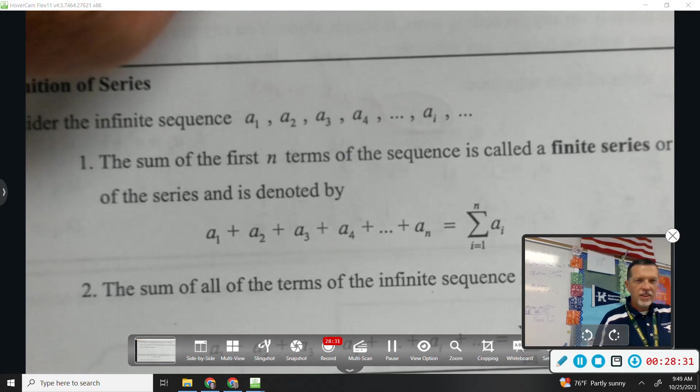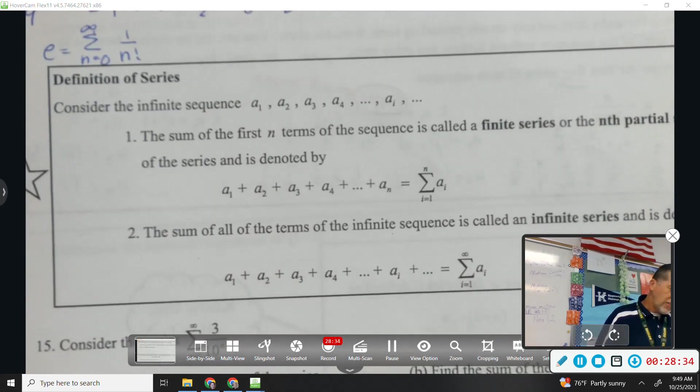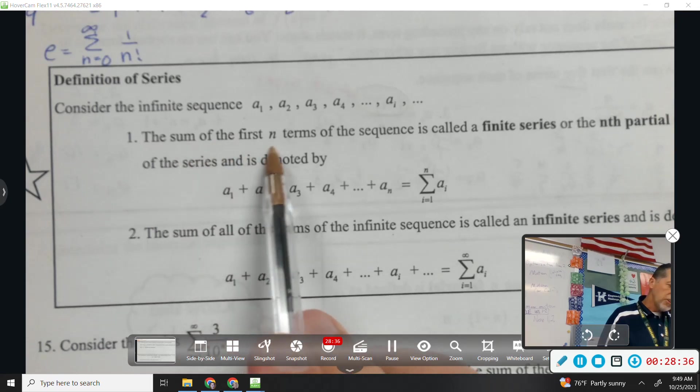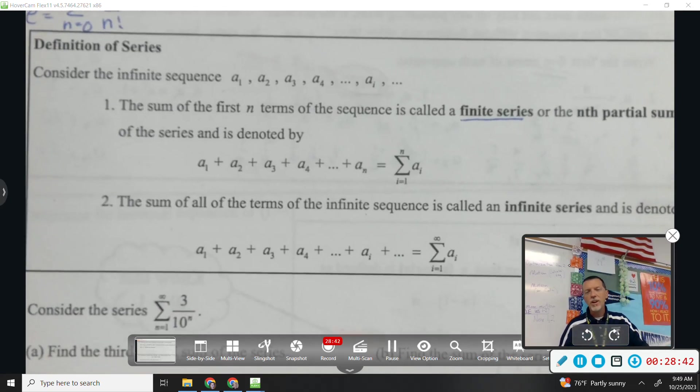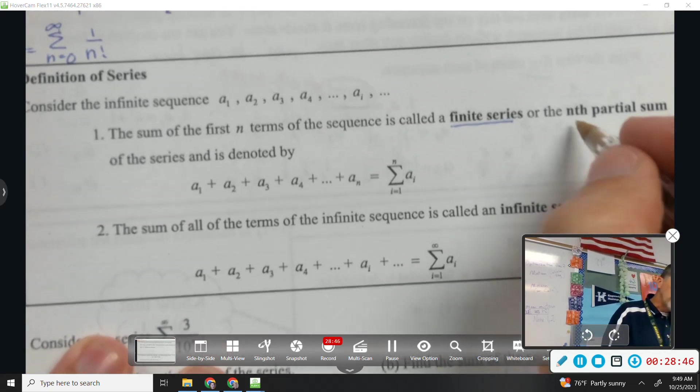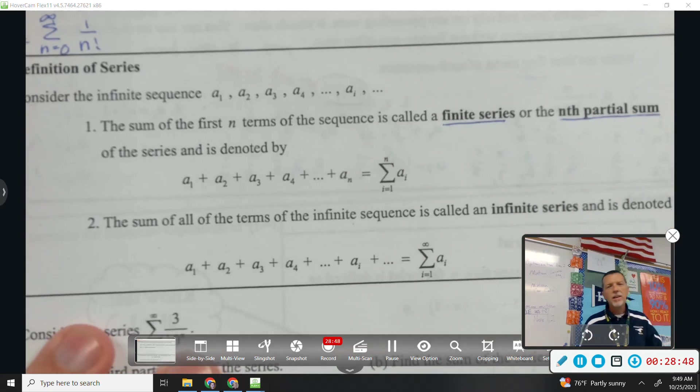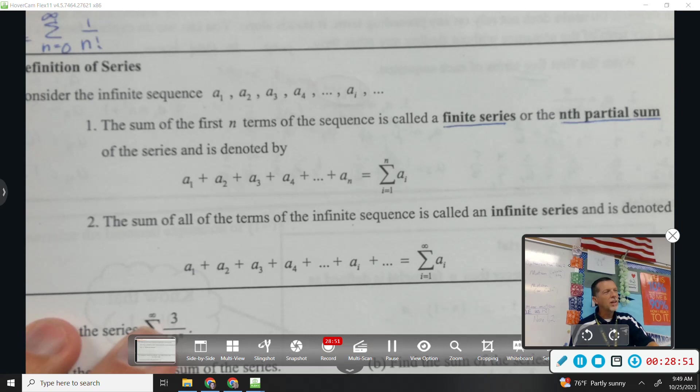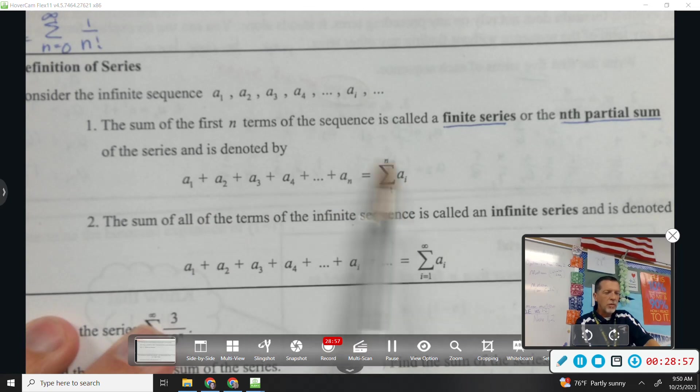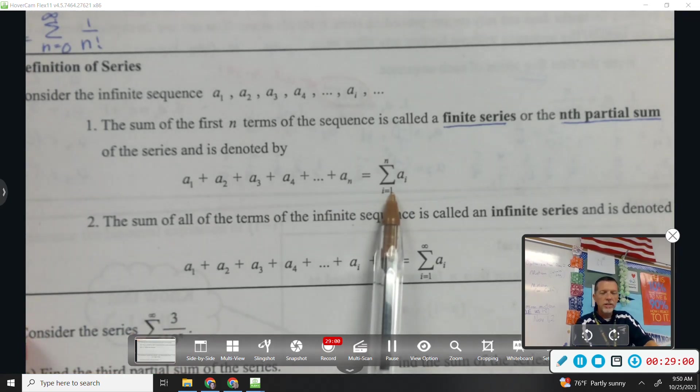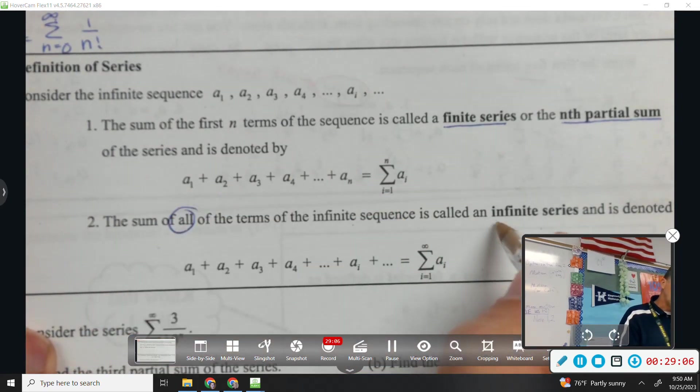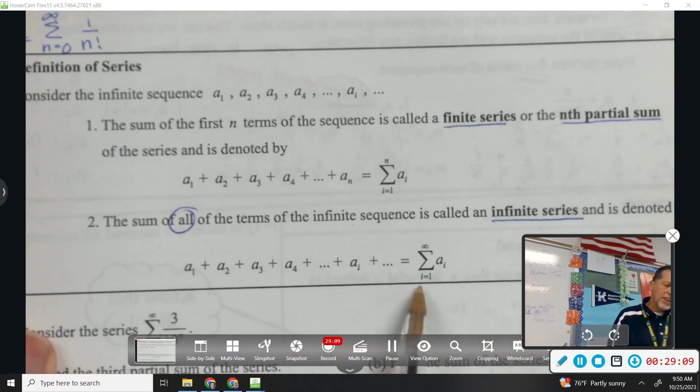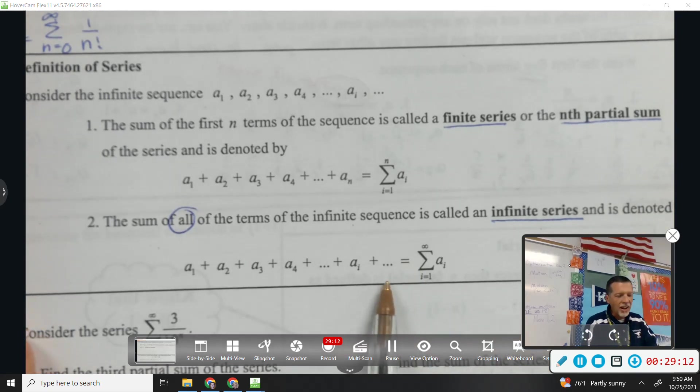All right. Definition of series. Consider the infinite sequence. The sum of the first in terms of the sequence is called a finite series. Again, don't go forever. You stop somewhere. Or the nth partial sum. Partial because we didn't go all the way. All the way meaning to infinity. And we already talked about what this means. It feels a little out of order here. The sum of all the terms of an infinite sequence is called an infinite series. And it looks like that. So it's like one to infinity and then dot, dot, dot because you never get there.